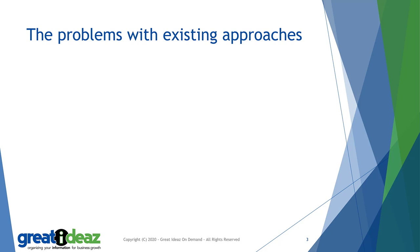So let's start by looking at the problems that we're trying to solve. The biggest problem in IT is fuzzy business requirements. What happens is that business users have a general sense of what they want to achieve and they tell us what they want us to implement. We go away, we execute it, we bring it back, we show it to the business user and they say, 'Yes, that's what I said, but not quite what I want. Can you make these changes? Can you enhance this? I think you misunderstood that.' And the longer the development cycle between the business user saying what they want and us showing them our actual implementation, the worse it is.